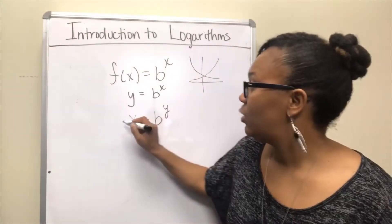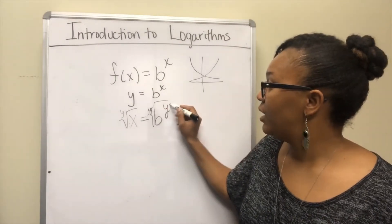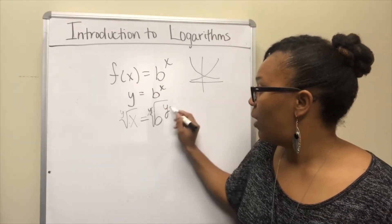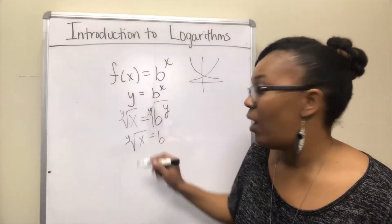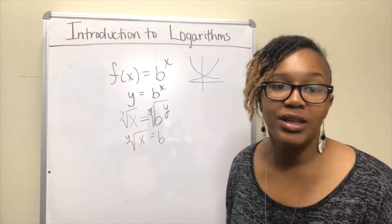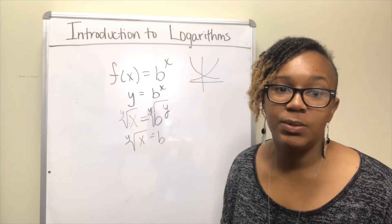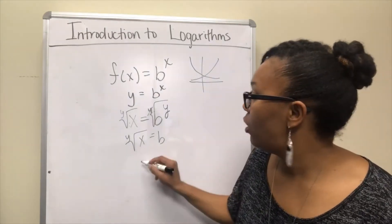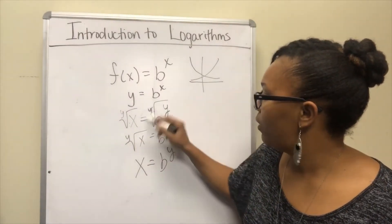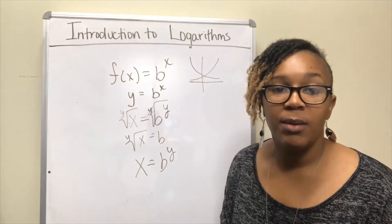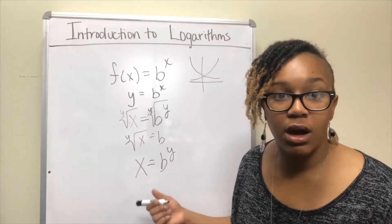You might think we'll take the y root of both sides. Well, taking the y root would cancel out the y power, but over here you essentially still have y in the exponent, because the y root is the same as x to the 1 over y. So it becomes an issue — you can't take y out of the exponent. So someone came along and, going back to where we had x equal b to the y, developed a logarithmic function equivalent to this and called it the logarithmic function.